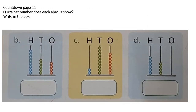Now please open your Countdown page 11. Question number 4 is: what number does each abacus show? Write in the box. You will count the beads and write the answer. Part B: count with me — 1, 2, 3, 4, 5, 6, 7, 8: 8 beads in hundreds. Write 8 under the hundreds column. In tens: 1, 2, 3, 4, 5: 5 beads, so write 5 tens. In ones: 1, 2, 3, 4: write 4.